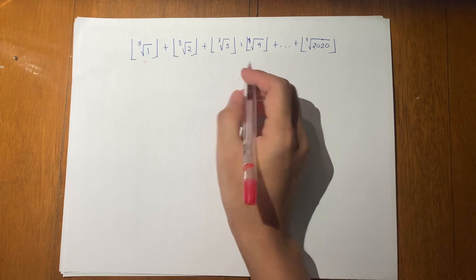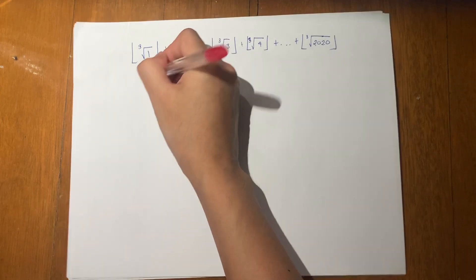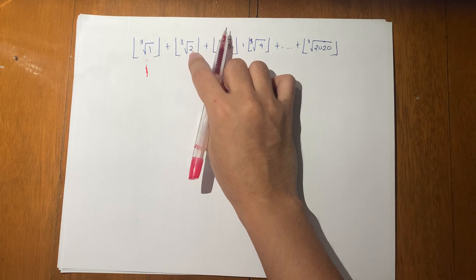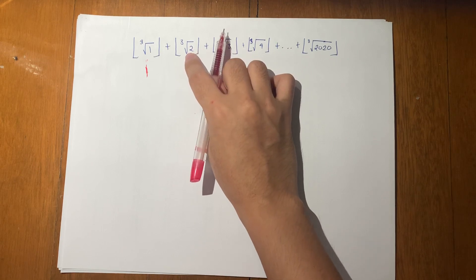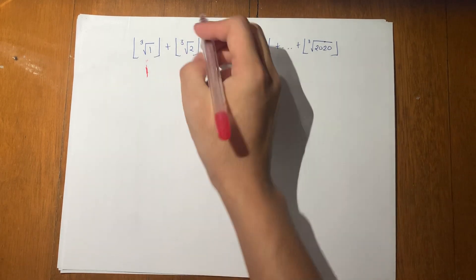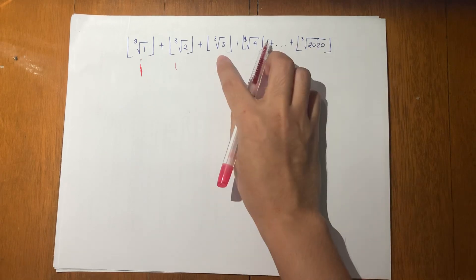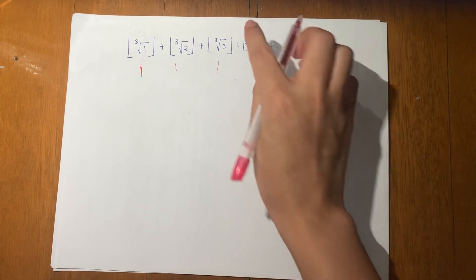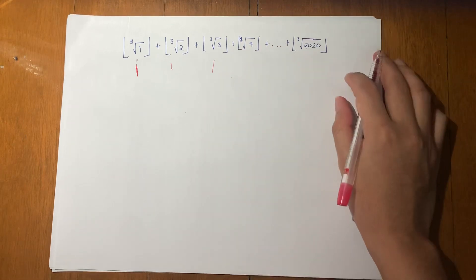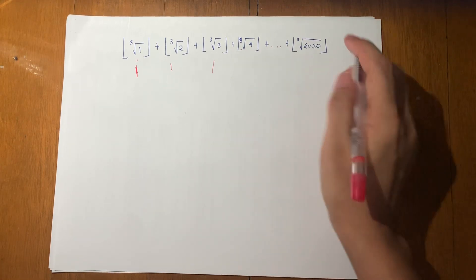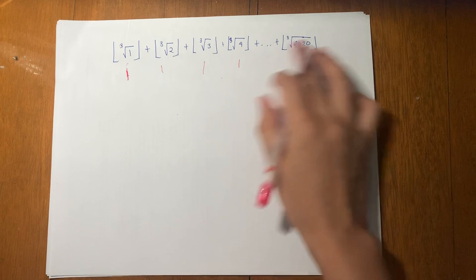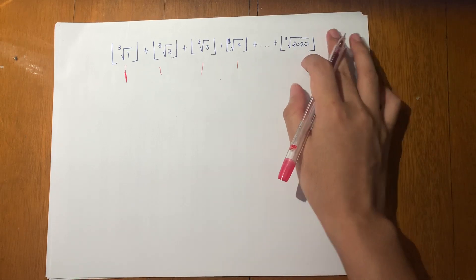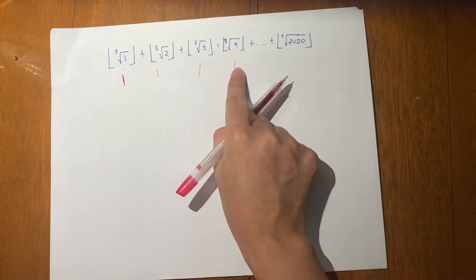The cube root of 1 is, of course, 1. So the floor of that is just 1. The cube root of 2 is something greater than 1 but less than 2 — it's one point something. So the floor of that is 1. The cube root of 3 is one point something as well, so the floor of that is 1. The cube root of 4 is also greater than 1. The question now is: until when do we get the number 1 as the floor?